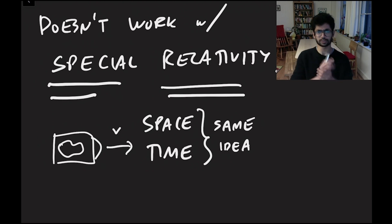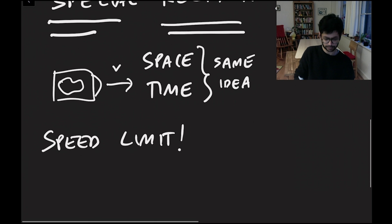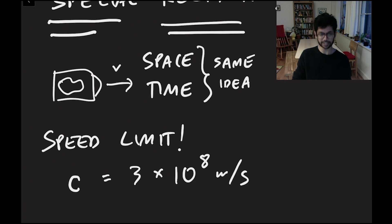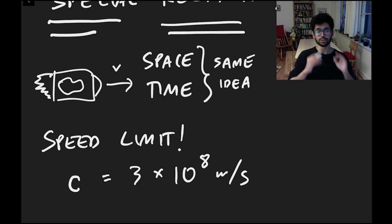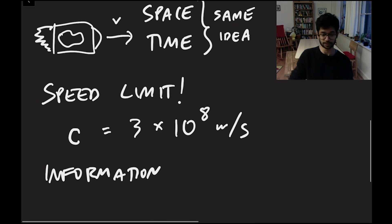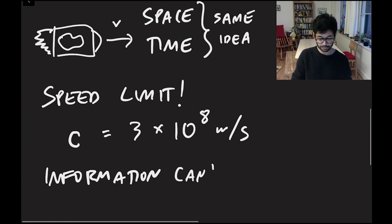One of the consequences of special relativity is that there is a speed limit in the universe. That speed limit is the speed of light, which we normally call c. This is very fast — it is 3 times 10 to the 8 meters per second. When I say speed limit, I really mean it: there is absolutely no way that you can go faster, no matter how powerful your rocket. Not only can you not go faster, it's also a fact that information cannot be transmitted faster than the speed of light.